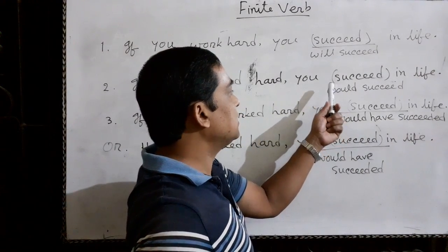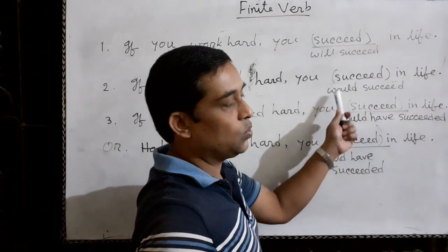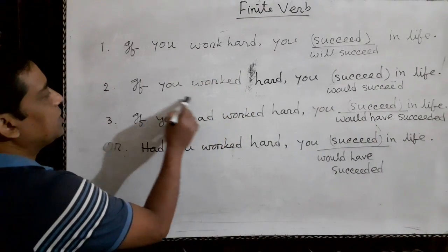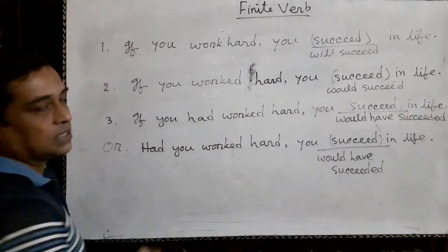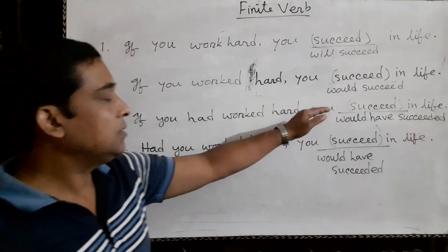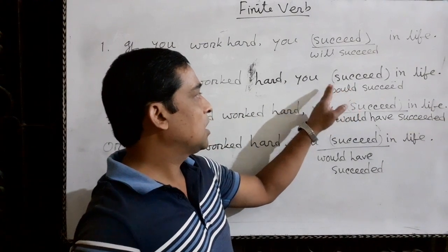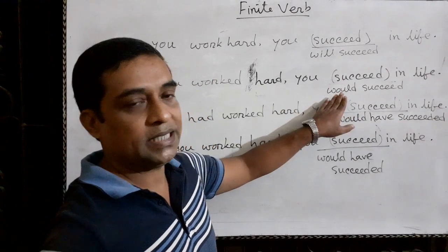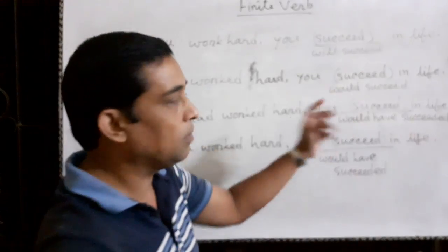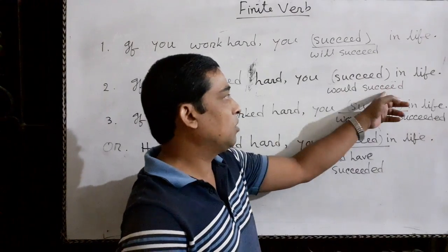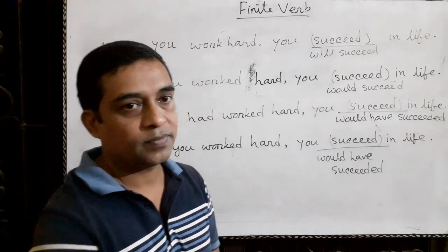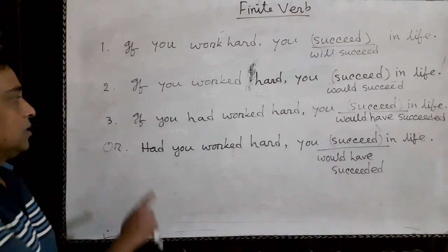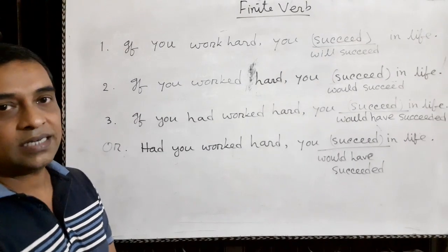So the correct answer is 'could succeed.' To repeat: if the subordinate clause is in past indefinite tense, then we must write 'could' or 'might' after the subject on the basis of the meaning, followed by the base form of the verb. This is the second conditional. Now, the third conditional sentence can be written in two ways.